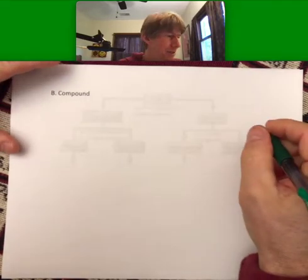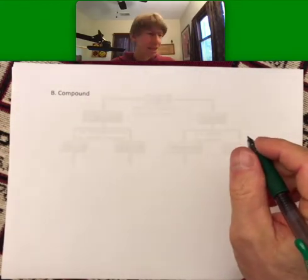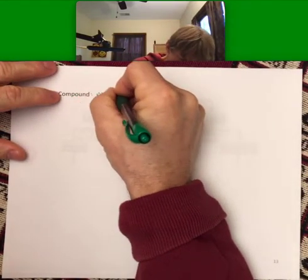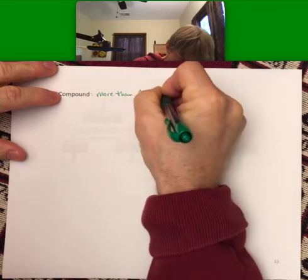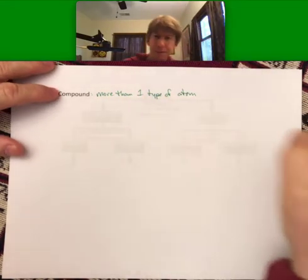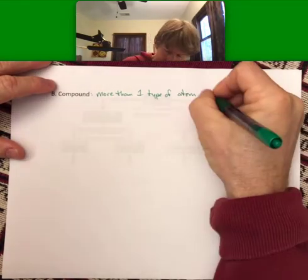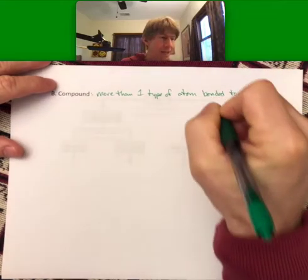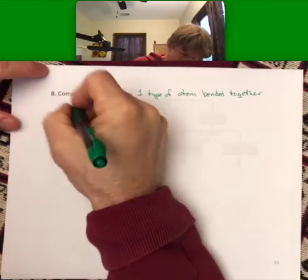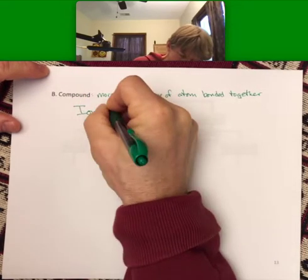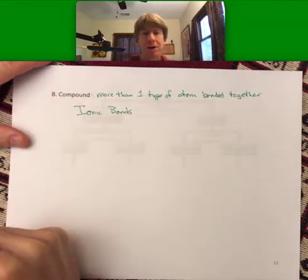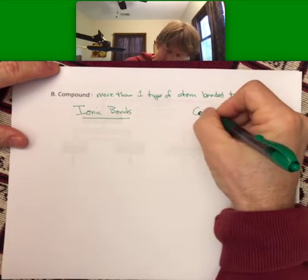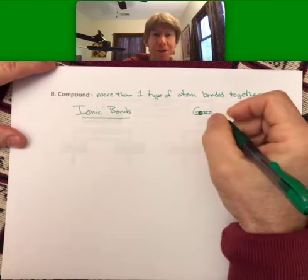Compounds. Compounds are going to be more than one type of atom bonded together. We will actually talk about two types of bonds. There are ionic bonds and there are covalent bonds.